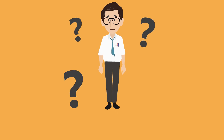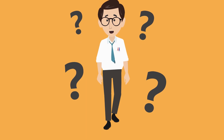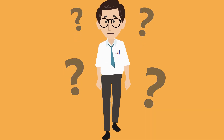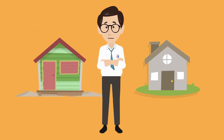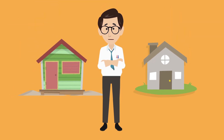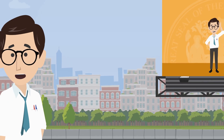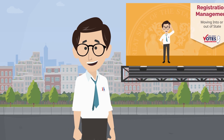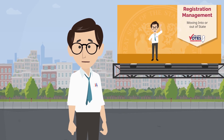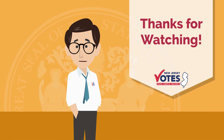So what other scenarios can you think of that would need to be considered for registration management? How about a voter who moves and may now have multiple addresses? Stick with me and let's roll over to Episode 3 of the Registration Management Series: Tackling Those Changes in Voter Addresses. And we're off!